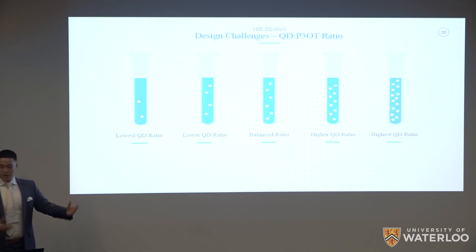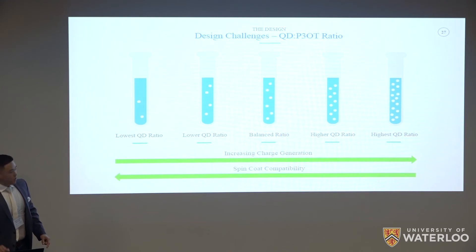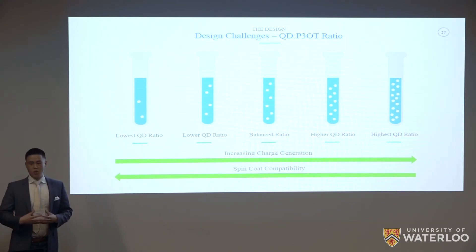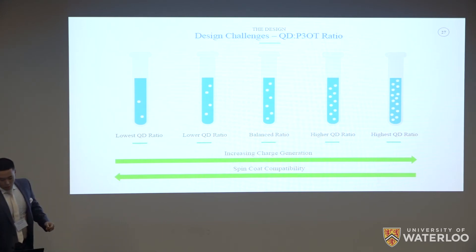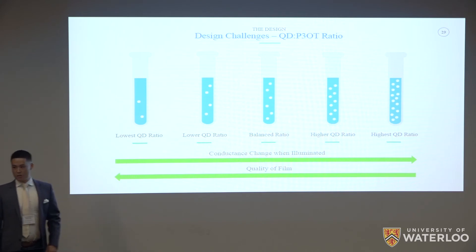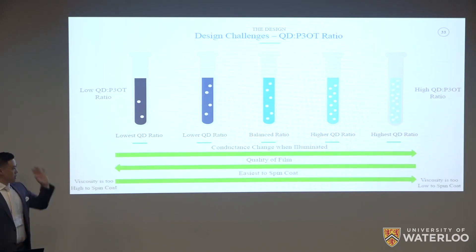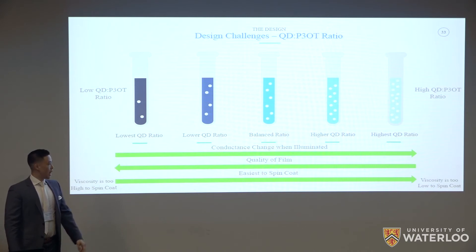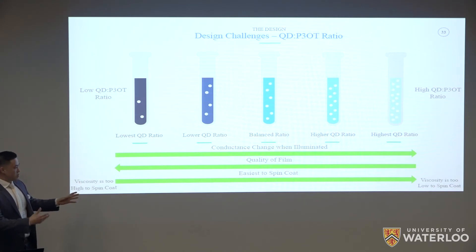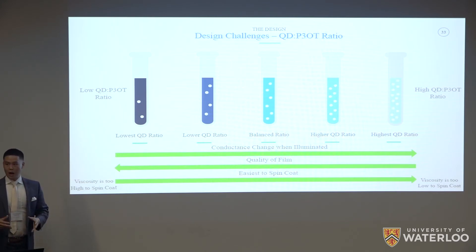The second challenge was determining the quantum dot-to-polymer ratio. More quantum dots gives more charge generation, but they're not well-suited for spin coating, making it harder to achieve a quality film. More charge generation means a larger conductance change when illuminated, while spin coat compatibility affects final film quality. Blending towards a higher QD ratio gives a larger conductance change but lowers film quality, so finding the middle ground across all three properties was the main challenge of our project.